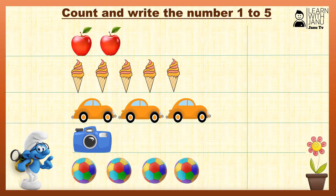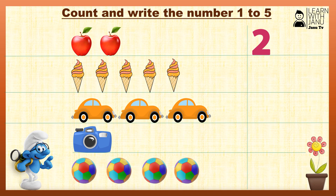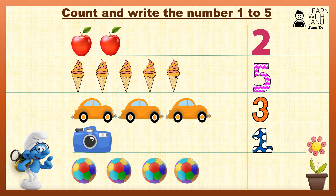Let's count and write the numbers. 1, 2 — Number 2. 1, 2, 3, 4, 5 — Number 5. 1, 2, 3 — Number 3. 1 — Number 1. 1, 2, 3, 4 — Number 4.